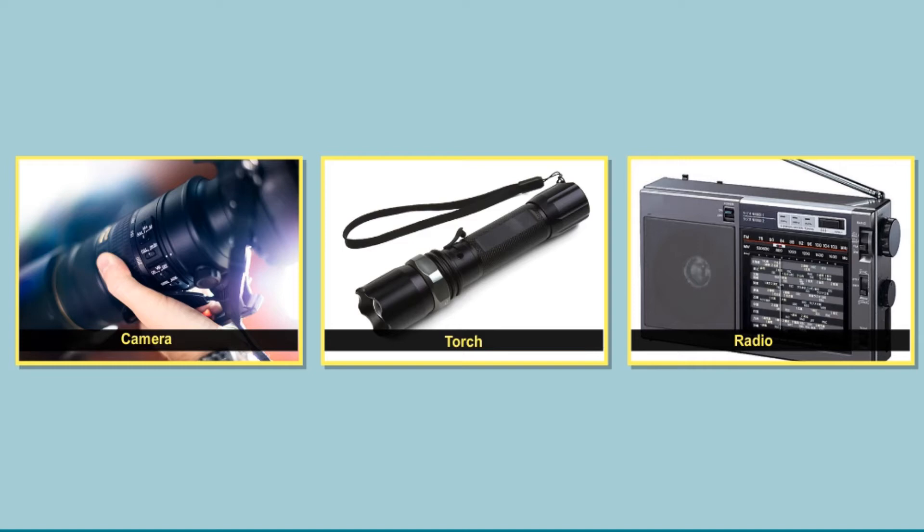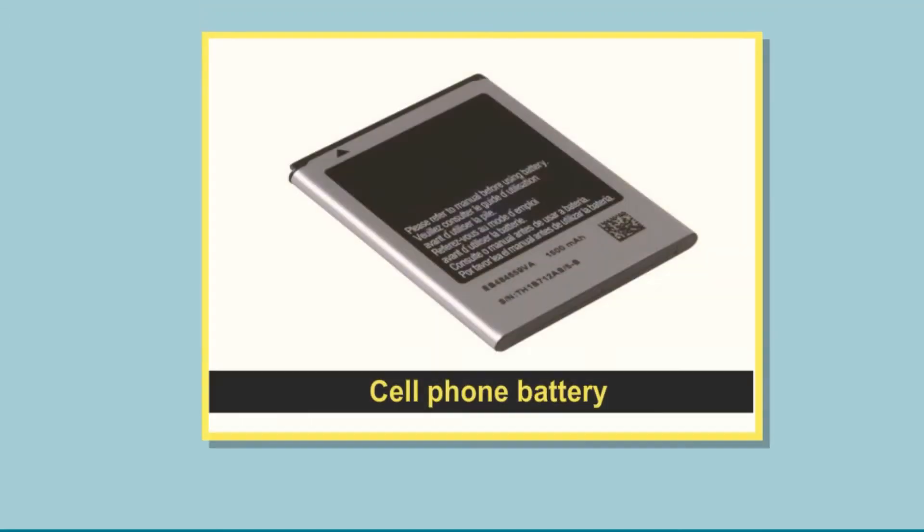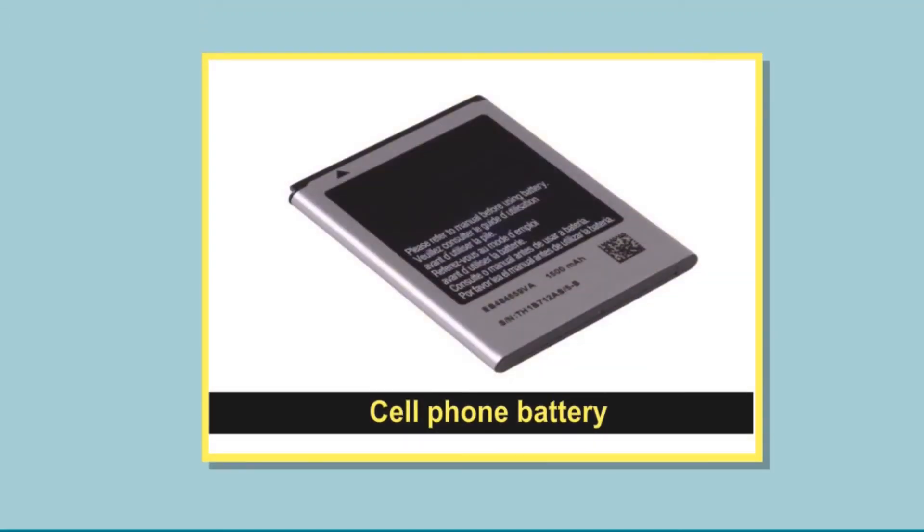These days, new types of cells are being made which can be used again and again. These are called secondary cells. These need to be recharged with electricity for repeated use. So the cell in a mobile phone is a secondary cell. When it stops providing current, it has to be recharged.